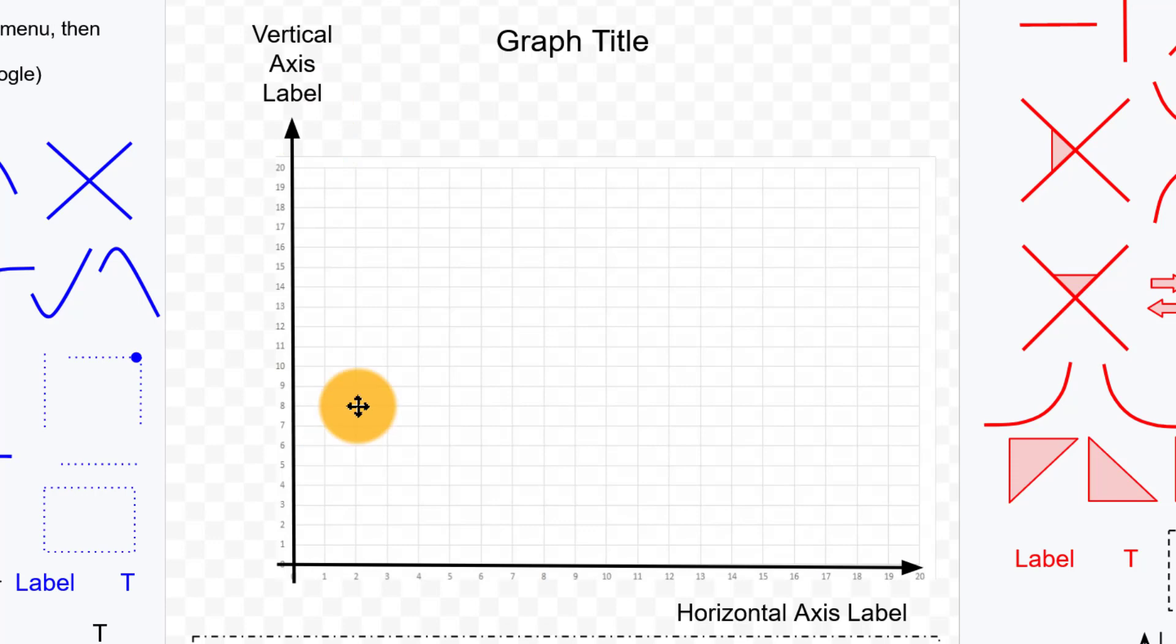Now, often when we make graphs, we'll want to think about independent variables and dependent variables. Usually we think about the independent variable being something that causes something else. So the dependent variable depends on the value of the independent variable.